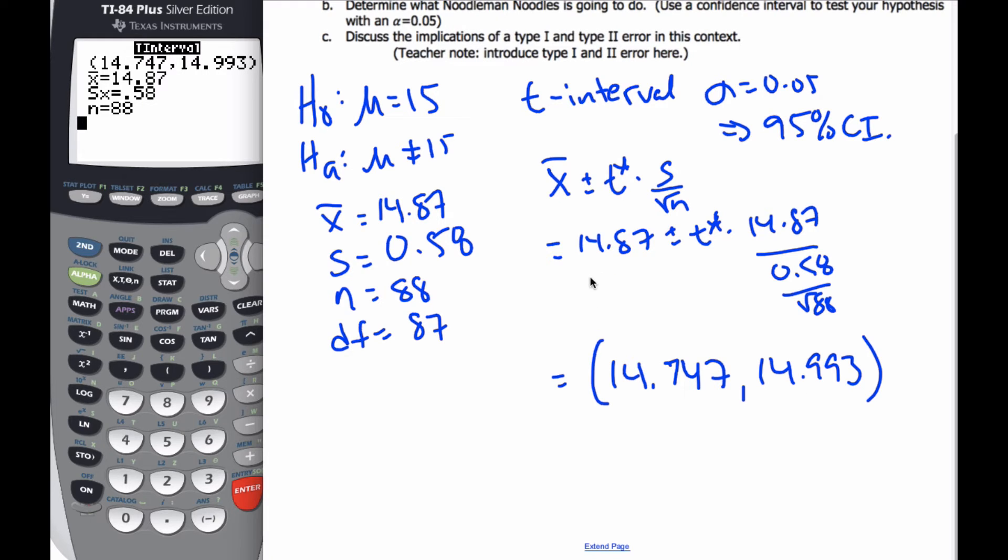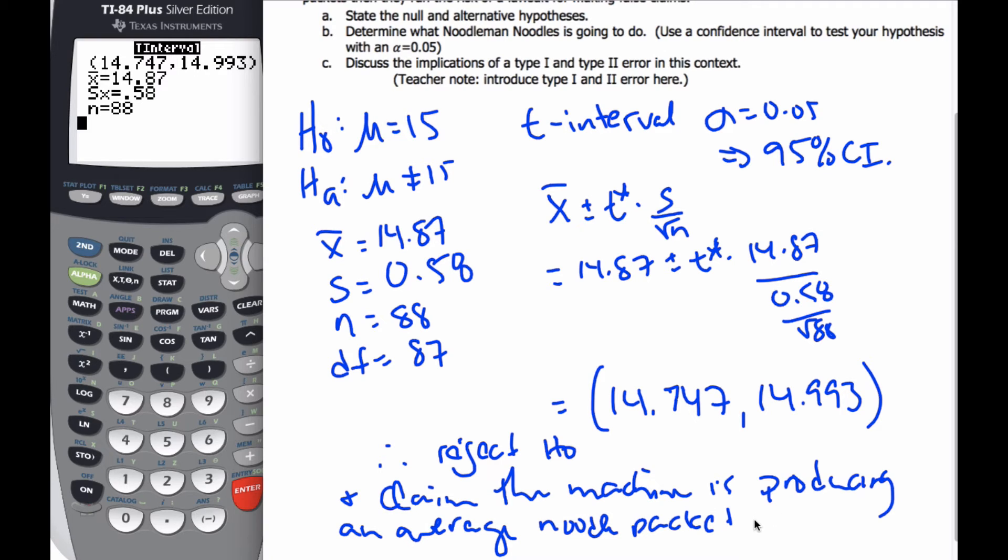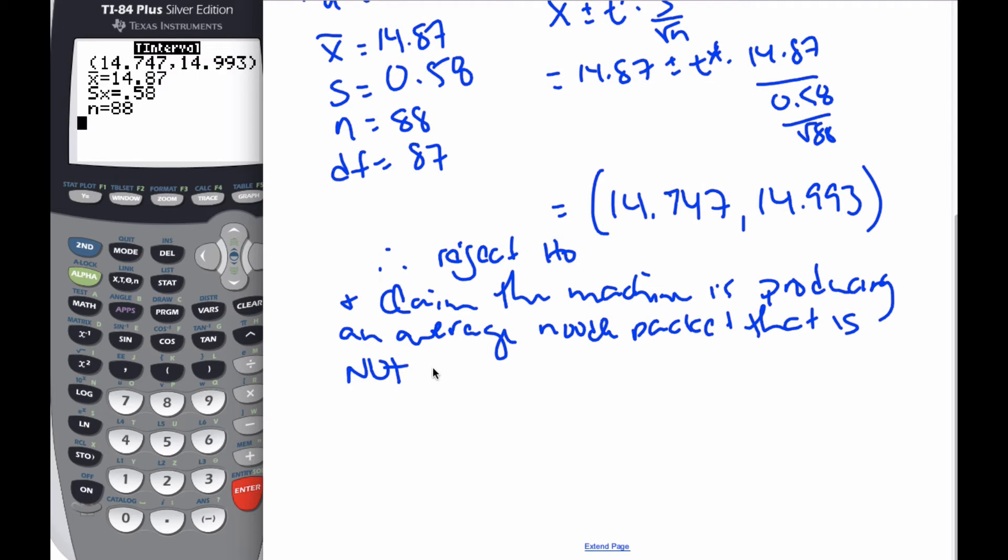This is what I was looking for: 15. 15 is not in the interval, therefore I am going to reject H0 and claim the machine is producing an average noodle pack that is not 15 ounces.